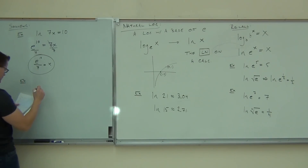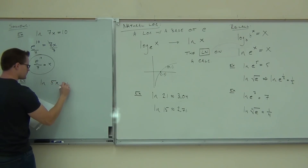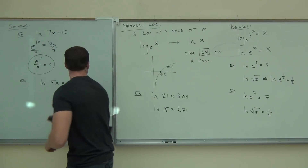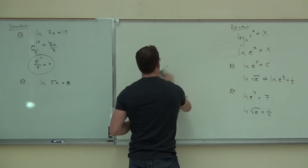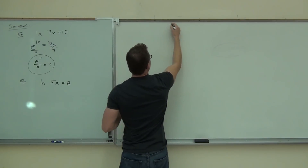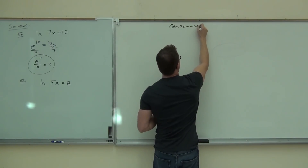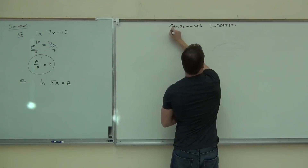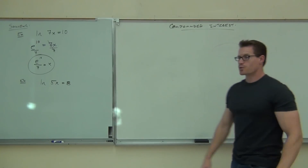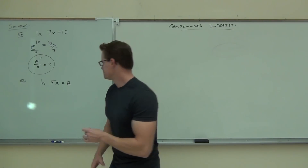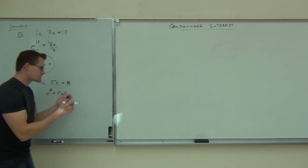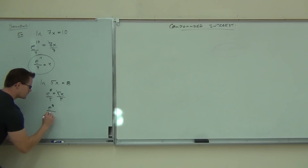Let's try another one on your own. If we have LN(5x) = 8: the base is E, the exponent is 8, so E to the 8th equals 5x. Divide by 5, and you get x = E to the 8th over 5. This is 10 easy points on the test if you remember the process.